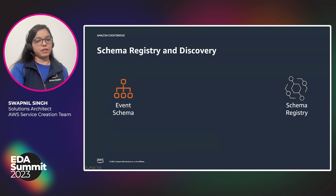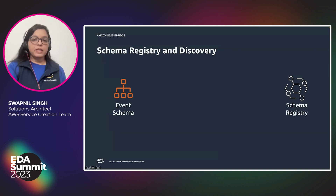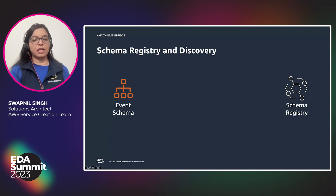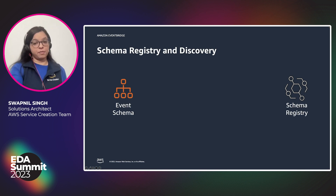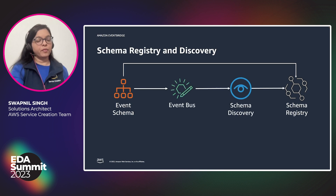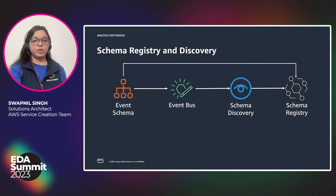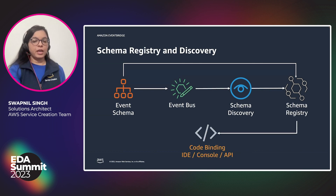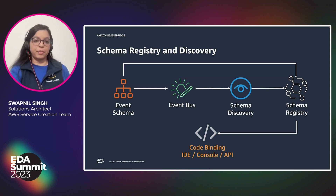Schema registry is another feature of EventBridge. A schema is defined as the structure of events sent to EventBridge, and schema registries are the containers for those schemas. The schema registry collects and organizes schemas in logical groups using schema discovery. Events received on the event bus are registered in the schema registry, and from those schemas you can create code bindings using IDEs, consoles, or APIs to use in your applications.